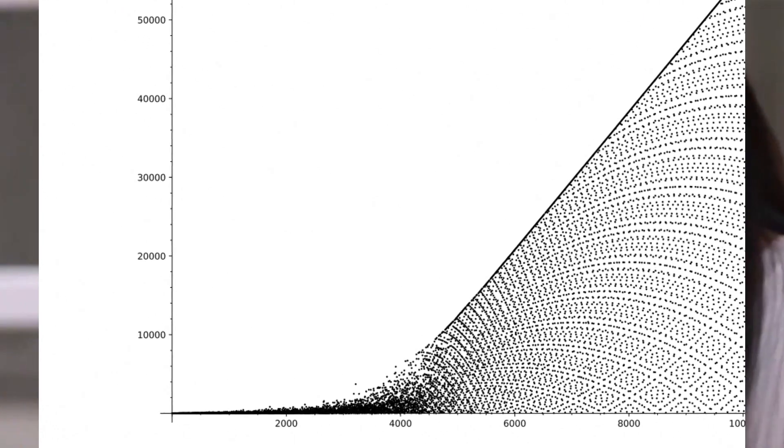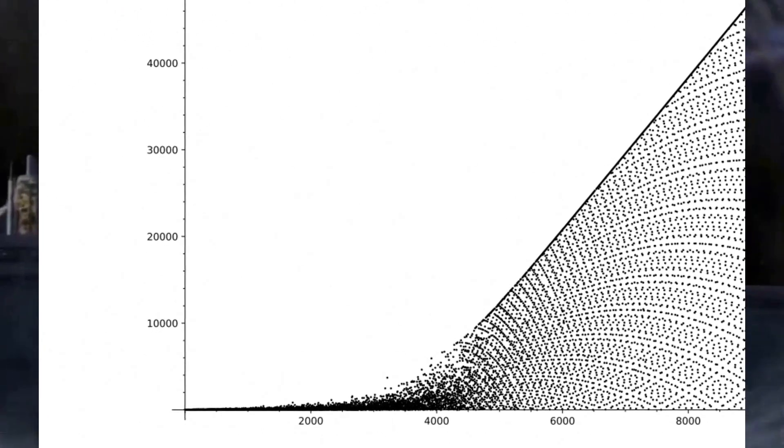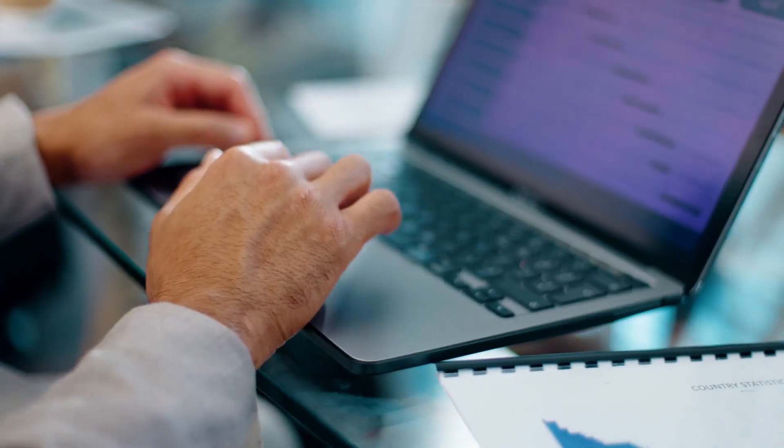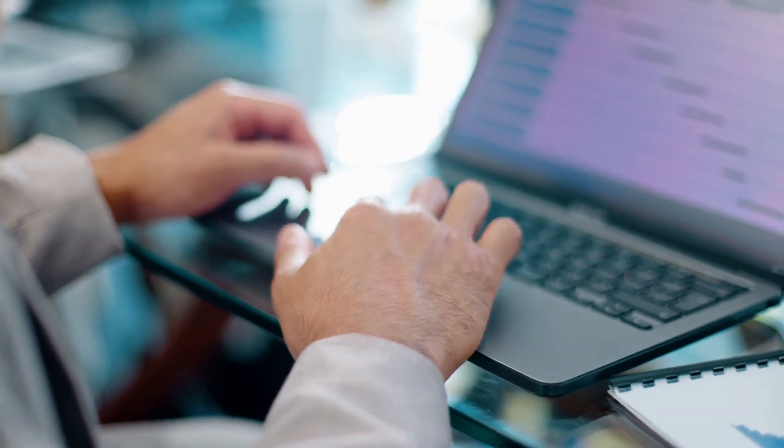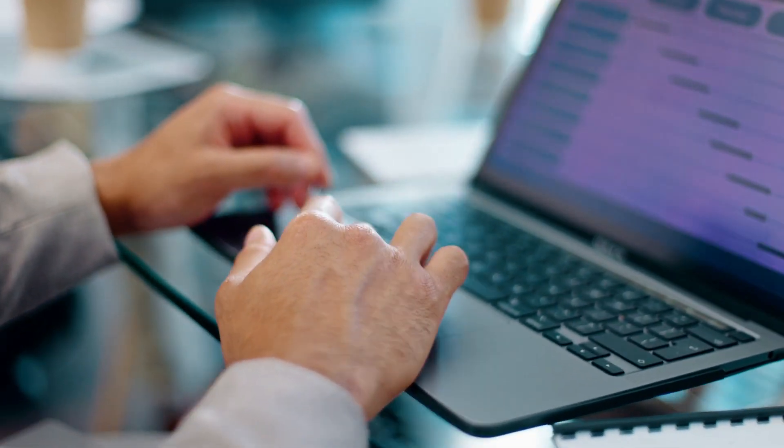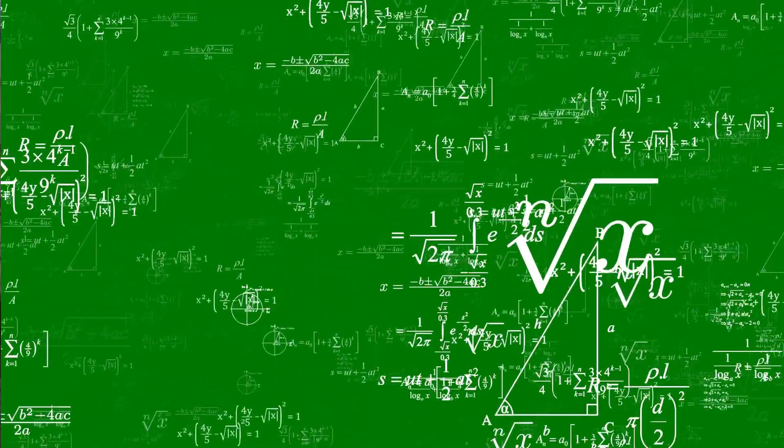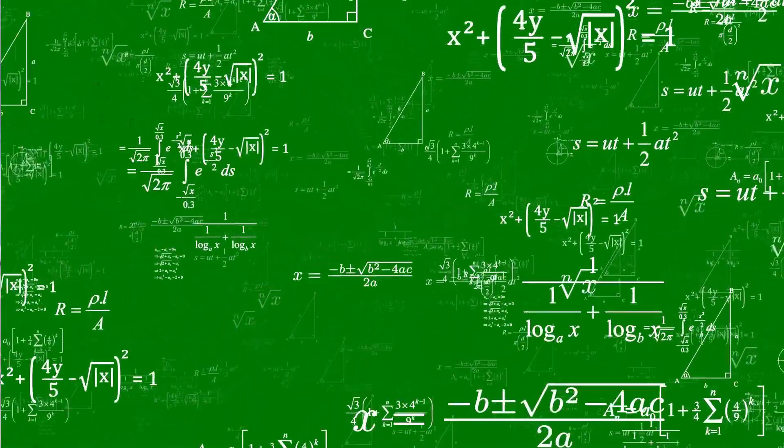The significance of this discovery extends to the broader field of mathematics. Conjectures are often accepted as truths, yet they can falter under scrutiny, underscoring the need for perpetual exploration and investigation. This incident underscores the importance of computational data and its role in challenging established beliefs. This outcome has been likened to creating a crater, revealing cracks in the foundation of other conjectures within number theory. Mathematicians are left pondering which widely held tenets may be toppled next.